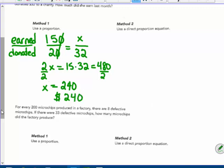Method two says use a direct proportion equation. So since the money donated to charity came second that would come second that would be my x. So y divided by x.